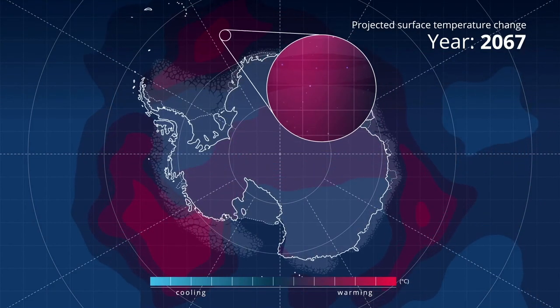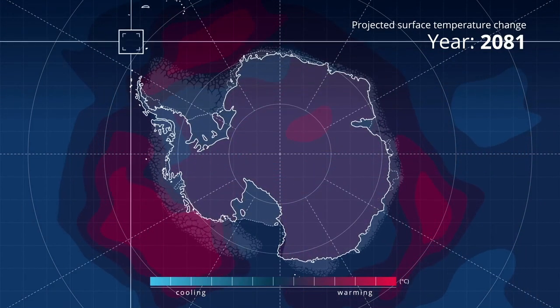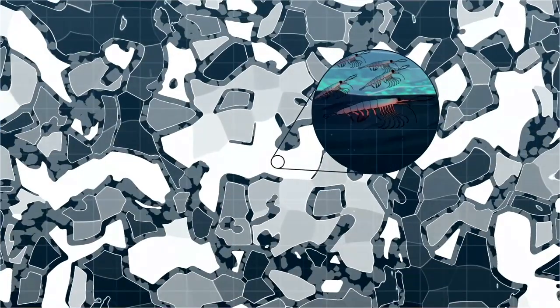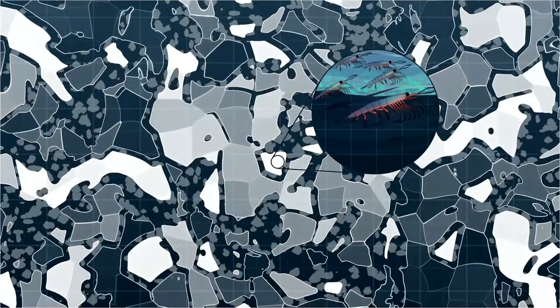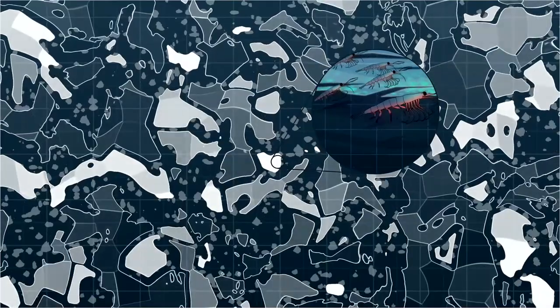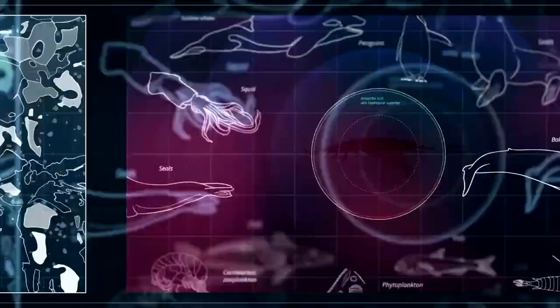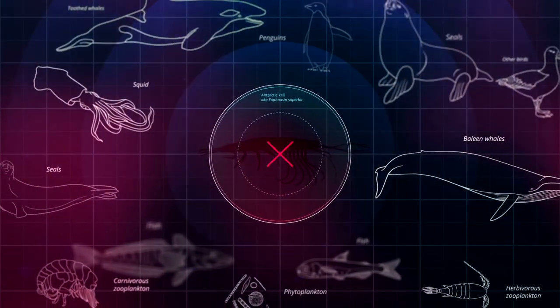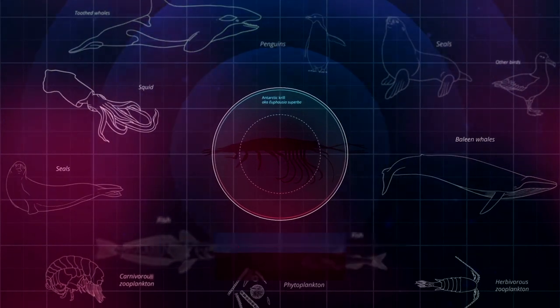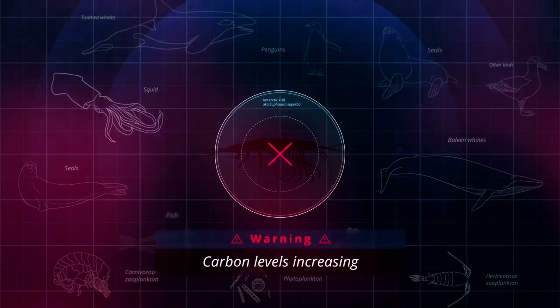Krill need cold water. Unfortunately, the way we have changed the Earth's climate means the oceans are heating. And the ice which protects Krill nurseries is melting. And when Krill are in danger, so is the web of life they support, and the whole climate of our planet.